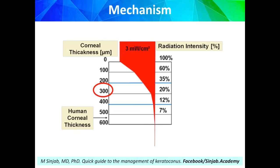The intensity of UV light has been determined to be 3 milliwatt per square centimeter, and it has been shown that the safety margin is 300 microns, after which this UV light will not harm the endothelium. So it has been decided that the minimum corneal thickness should be 400 microns at the thinnest location after removing the epithelium in the epi-off technique.